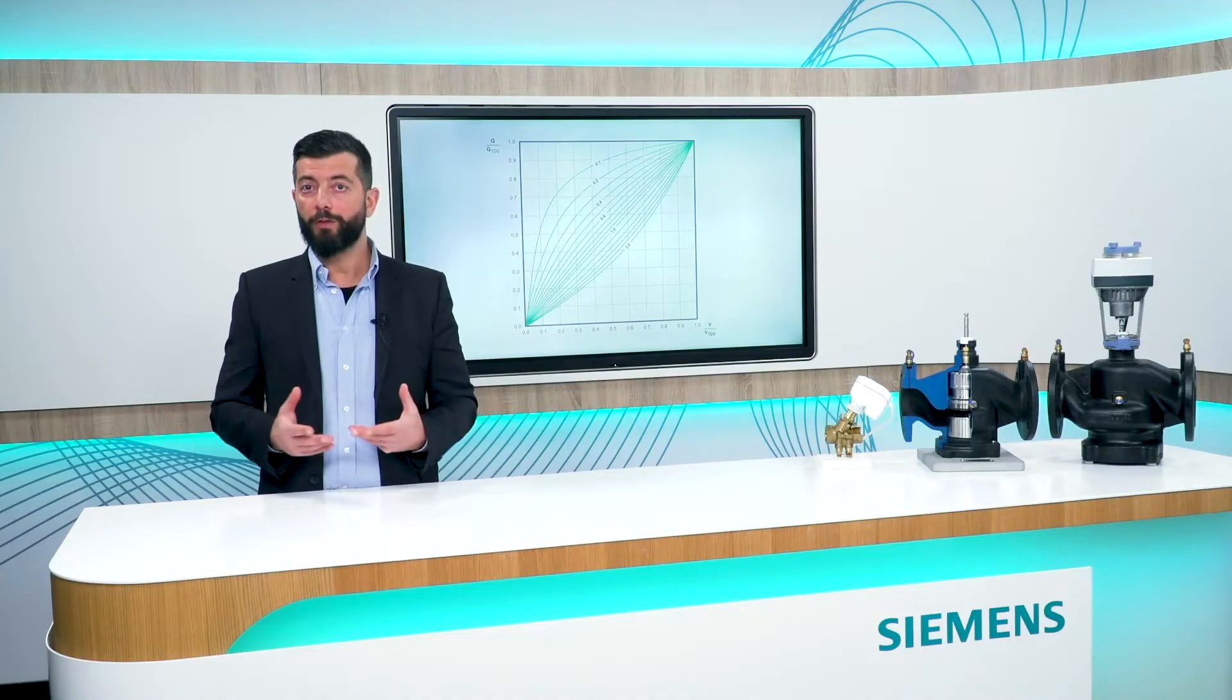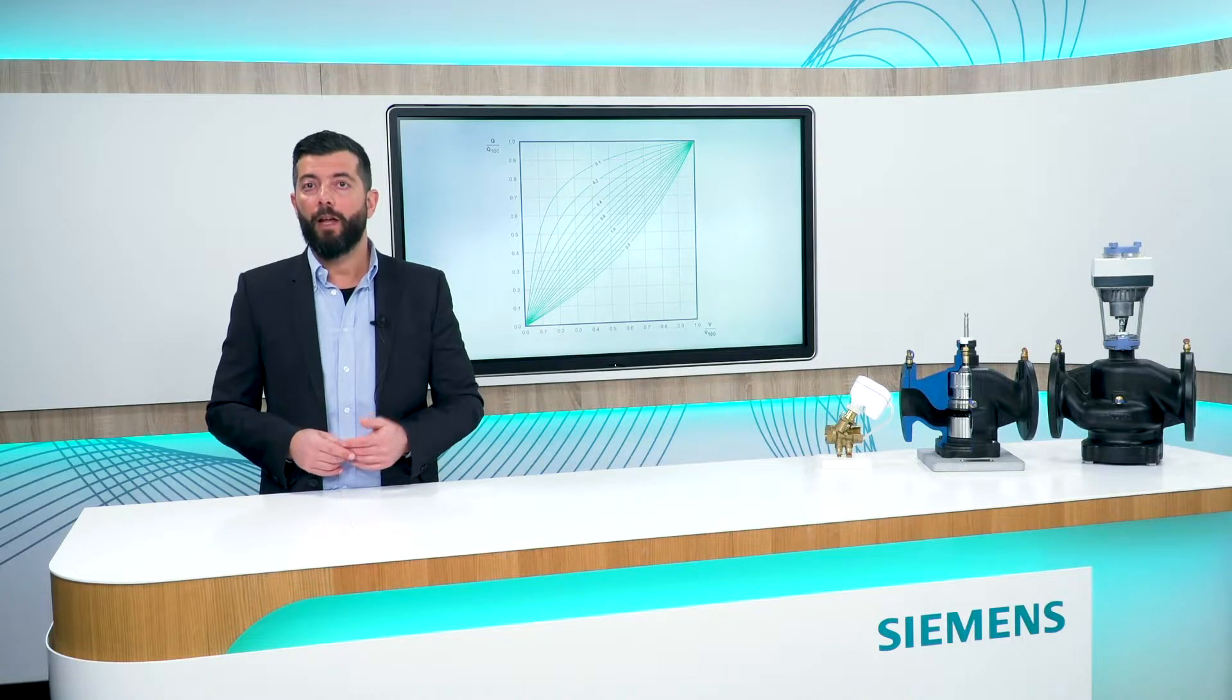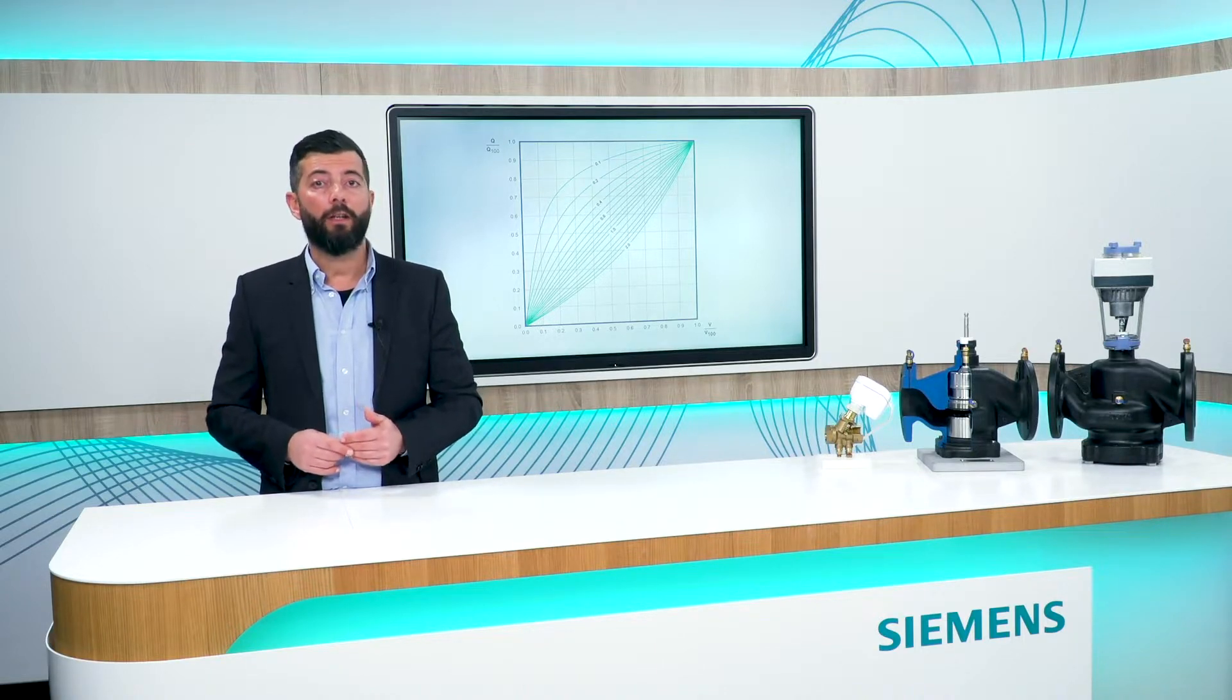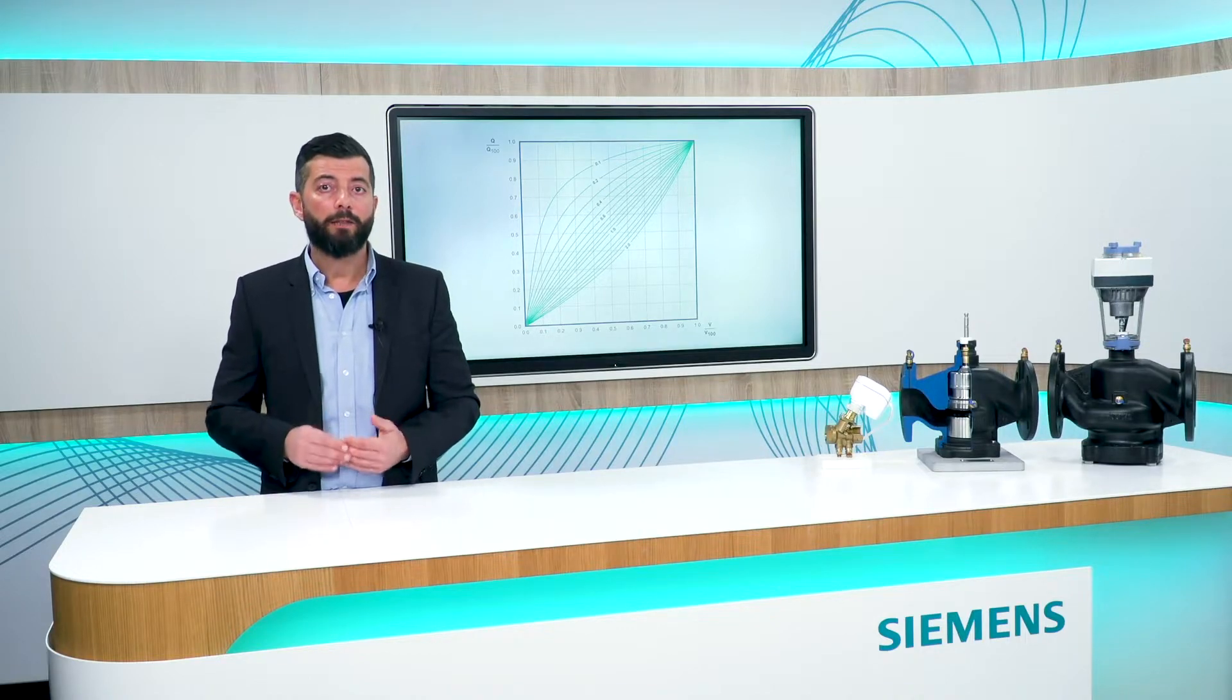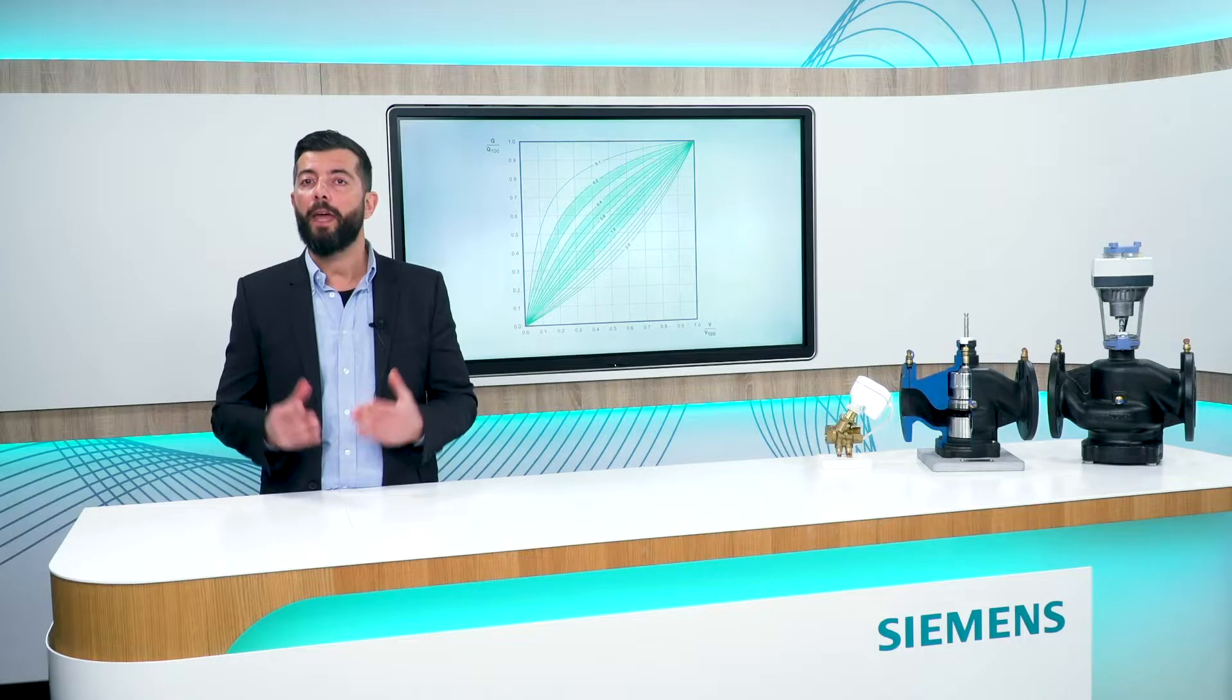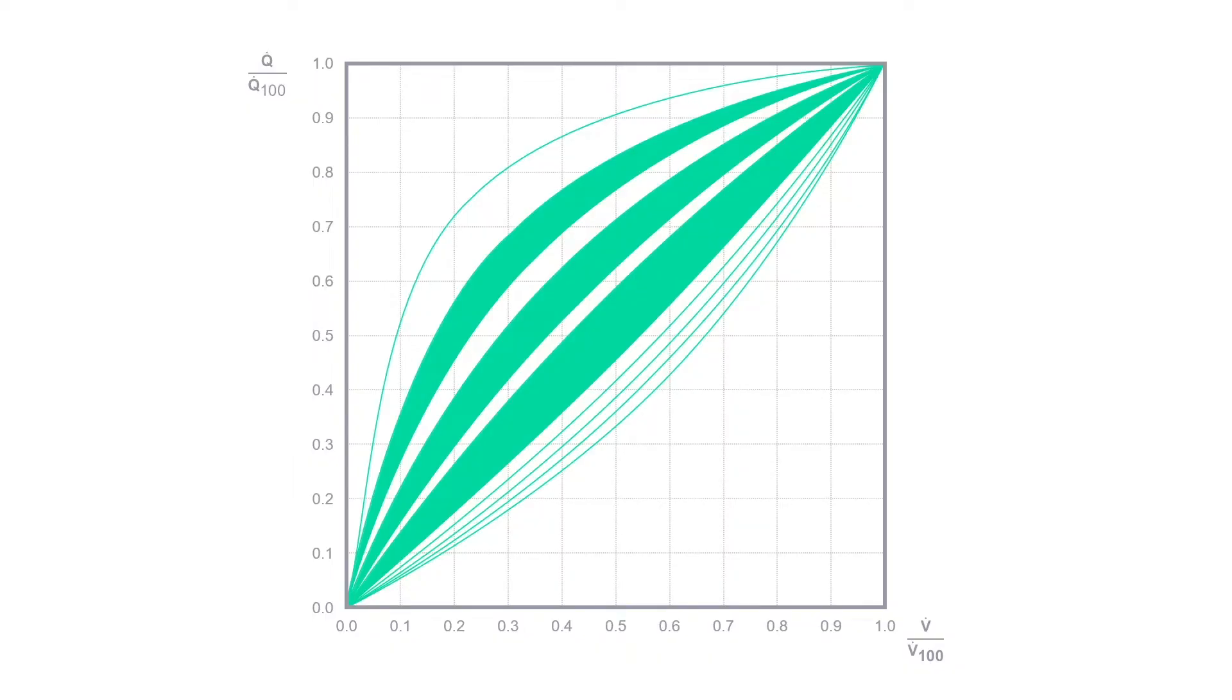And we call these curves the A-value, and they provide the degree of non-linearity of the characteristic. Fan coils, radiant panels and heat exchangers have different behaviors, and can be seen in this diagram by the different green areas.